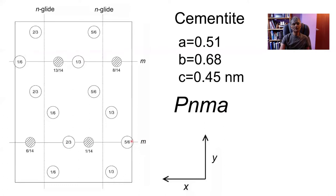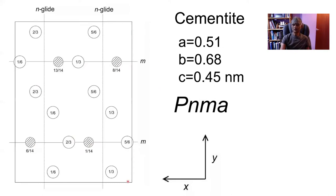Four of the iron atoms lie on mirror planes whereas the other eight are at general positions in the lattice — general position means there is only a monad passing through the point where the atom is located — and the carbon atoms are all on mirror planes, so there are two kinds of iron atoms. The importance of the primitive lattice is that the Burgers vector of a dislocation will be very large. If the Burgers vector is parallel to the z-axis it will be 0.45 nanometers, and a large Burgers vector means it is difficult to move dislocations, which is one of the reasons why cementite is much harder than some other structures in steel.